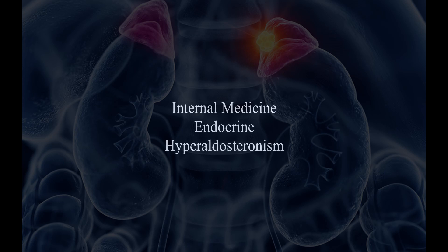The number one best test for a patient you suspect has primary hyperaldosteronism is an early morning plasma aldosterone concentration to plasma renin activity ratio — most just call this the aldosterone-renin ratio.